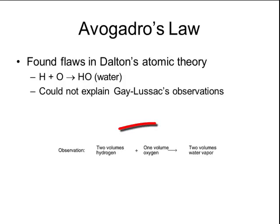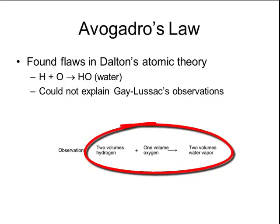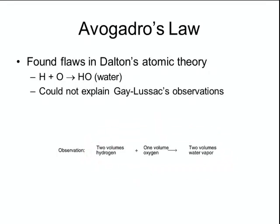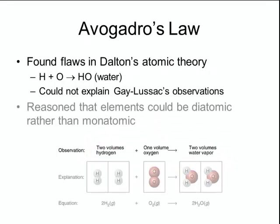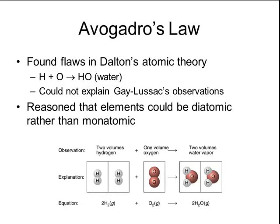For example, Gay-Lussac observed that two volumes of hydrogen plus one volume of oxygen always produced two volumes of water vapor, which was different than what Dalton's atomic theory proposed. So Avogadro proposed that elements could be diatomic rather than monatomic. Using this reasoning, if hydrogen is a diatomic gas and oxygen is a diatomic gas, that would explain why Gay-Lussac observed two units of hydrogen plus one unit of oxygen producing two units of water vapor.